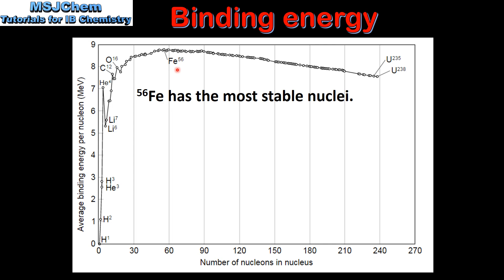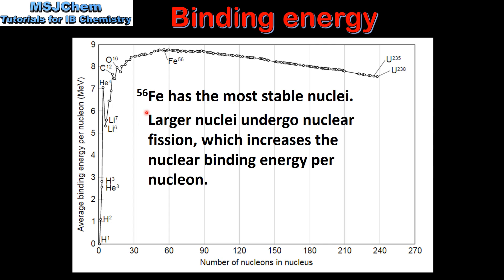Any isotope to the right or left of this maximum will undergo a nuclear reaction to increase the average binding energy per nucleon and become more stable. Larger nuclei, which are to the right of iron-56, undergo nuclear fission, which increases the nuclear binding energy per nucleon. An example of this is the nuclear fission of uranium-235, which we looked at in a previous video.